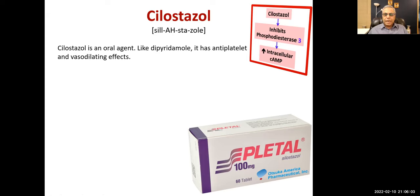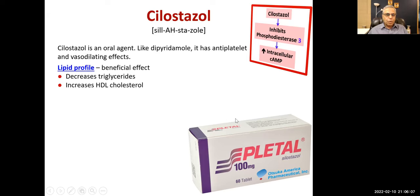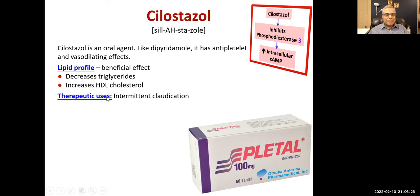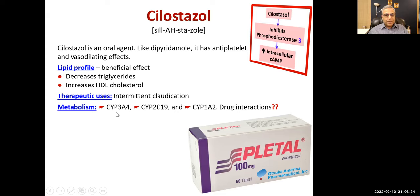Cilostazol comes in tablet form — it is given orally. It has a beneficial effect on lipids: it is not an anti-lipid drug per se, but it increases HDL and decreases triglycerides — both beneficial effects. Therapeutic use is intermittent claudication, meaning pain in the legs on walking a short distance. Metabolism is by CYP3A4, CYP2C19, and CYP1A2 — the same enzyme that metabolizes clopidogrel — so drug interactions are expected from genetic polymorphisms or enzyme inducers/inhibitors.